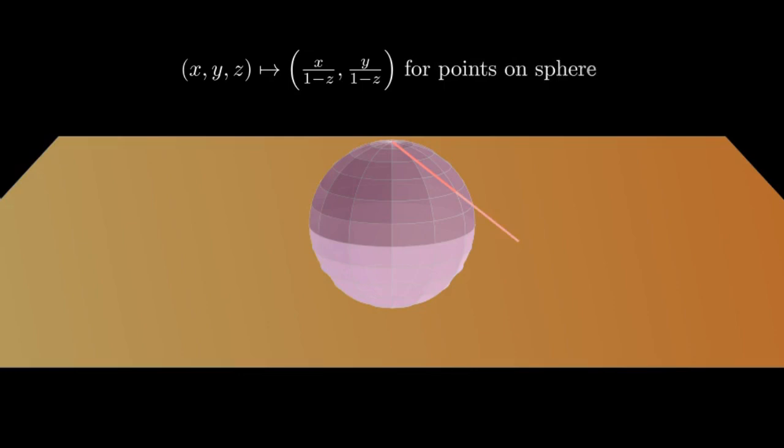With some geometry, we can find an explicit formula for the map. Every point on the sphere has a corresponding point on the plane, except the north pole.